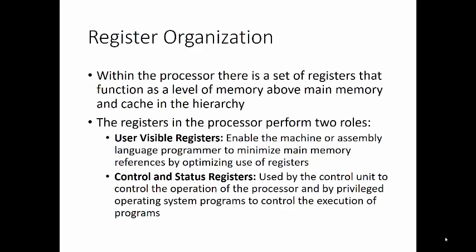Let's take a look at register organization. Within the processor, there is a set of registers that function as a level of memory above main memory and cache in the hierarchy. The registers in the processor perform two different roles. User-visible registers enable the machine or assembly language programmer to minimize main memory references. Control and status registers are used by the control unit to control the operation of the processor, and by privileged operating system programs to control the execution of programs.